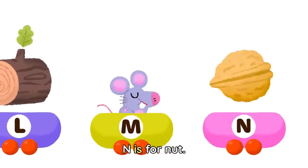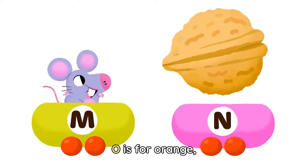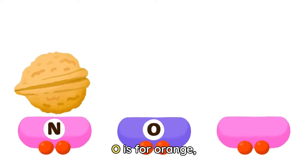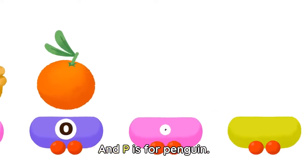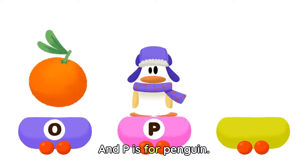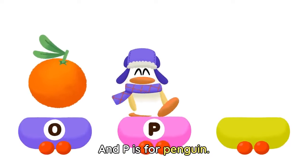M is for Mouse, N is for Nuts, O is for Orange, and P is for Penguin.